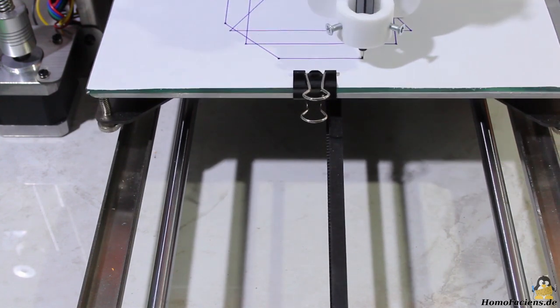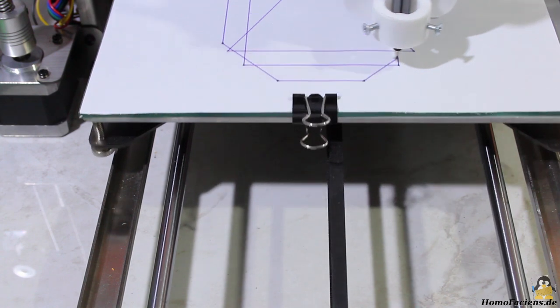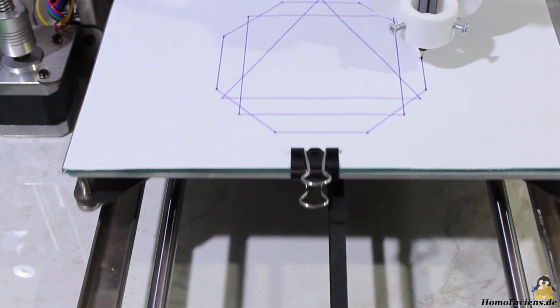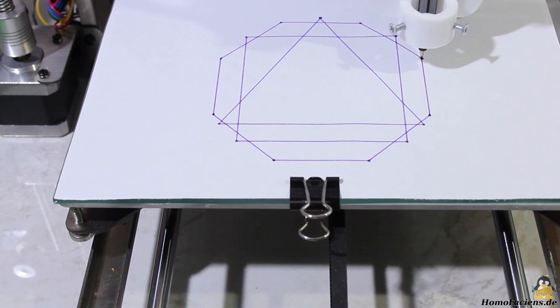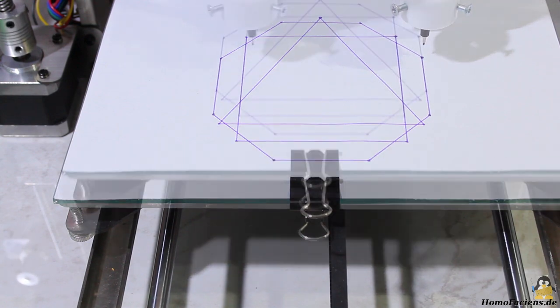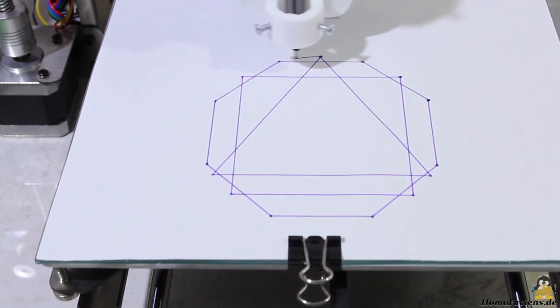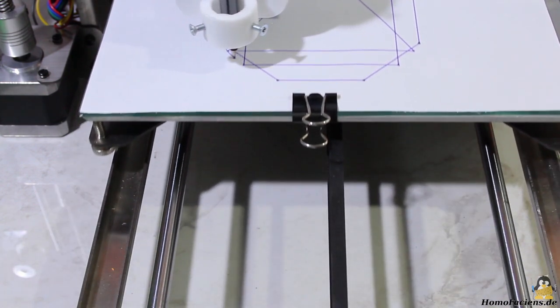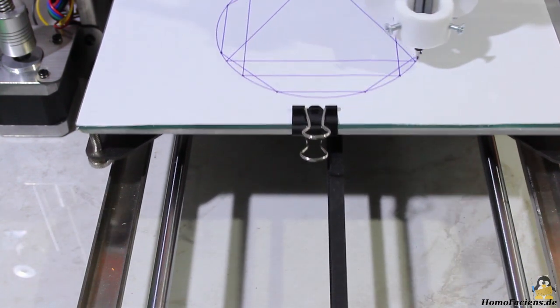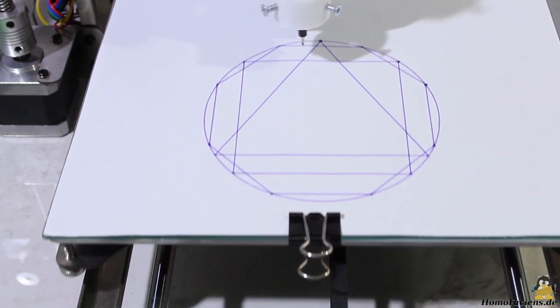It's a lot more convenient to let some lines of software code do the calculations and store them in a file or transmit them directly to the plotter. Typing the coordinates of an approximation of a circle having 100 lines manually would be extremely time consuming.